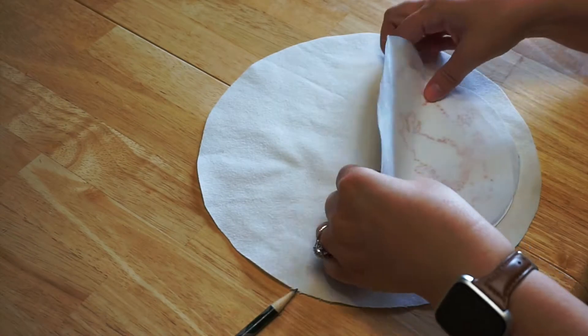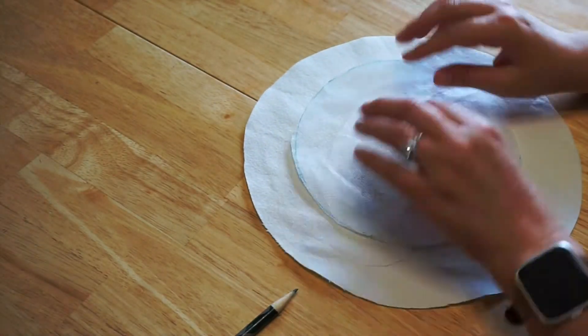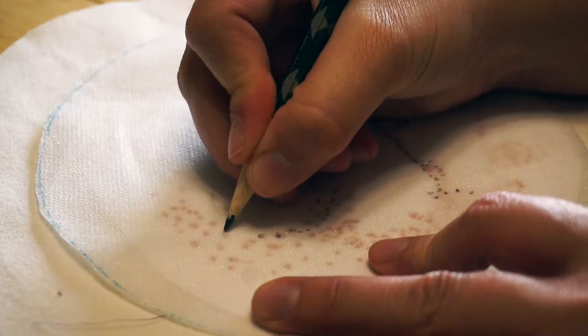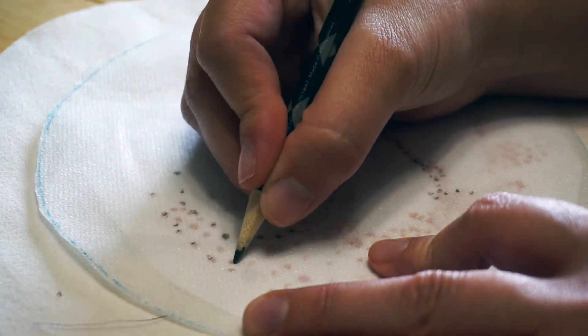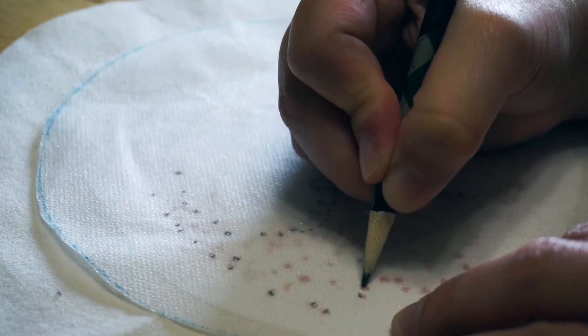Now this next part is important. Place the right sides of the interfacing and the paper together to trace your dog, so you end up making your marks on the glue side of your interfacing. This way when you iron it on, your dog will be facing the right direction when you do your embroidery.